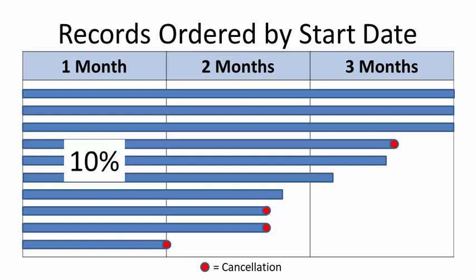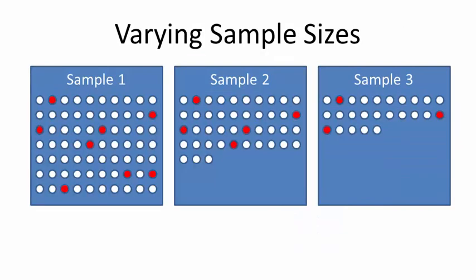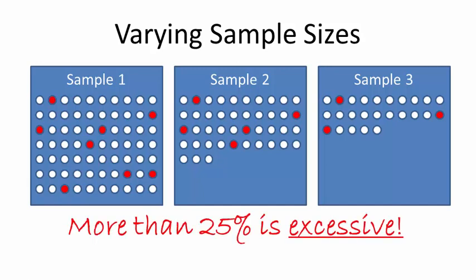This brings up the second major source of error, varying sample sizes. Since churn rate is a percentage, having different denominator sizes distorts results, especially when comparing sample groups. Statisticians say that if denominators vary by more than 25%, errors will be excessive. Unless you're accounting for these differences, your numbers will be off.